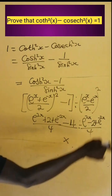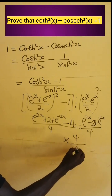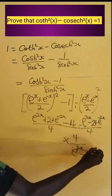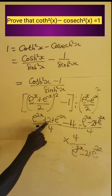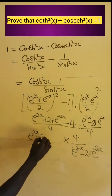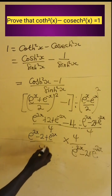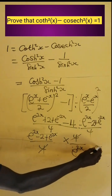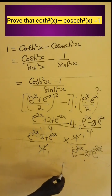We change the division to multiplication, flipping the denominator to get 4, divided by e to the power 2x minus 2 plus e to the power negative 2x. Now we take 4 from the numerator — we have e to the power 2x minus 2 plus e to the power negative 2x, all divided by 4. The 4 cancels 4, and this entire expression cancels that expression, leaving us with 1.